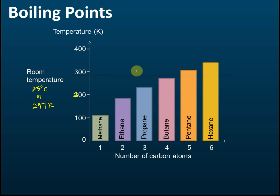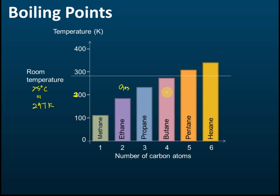From the chart, we can see that the first four alkanes have boiling points lower than room temperature. If the boiling point is lower than room temperature, then at room temperature these four alkanes exist as gases. After the fourth alkane, the boiling points are higher than room temperature.